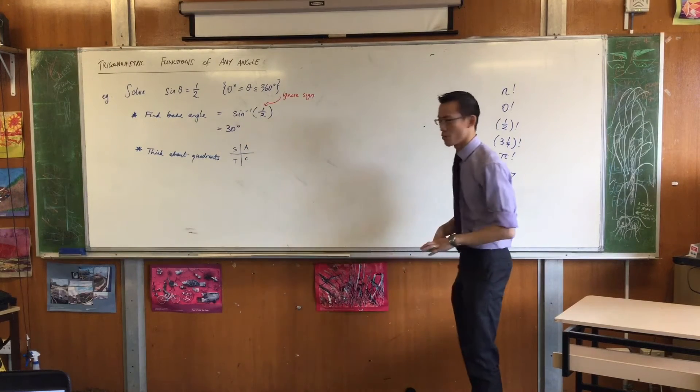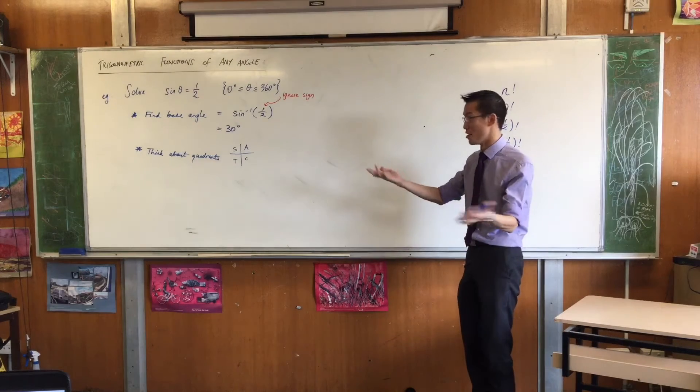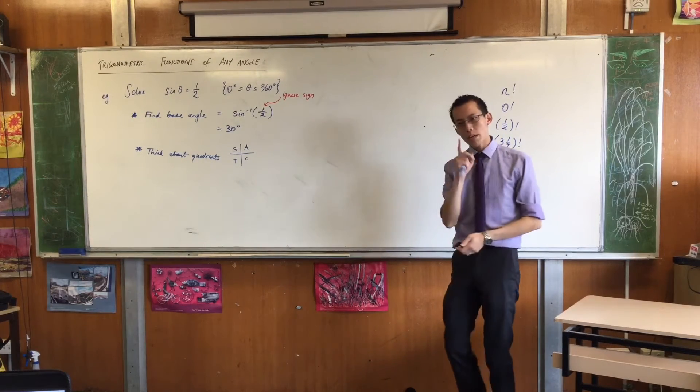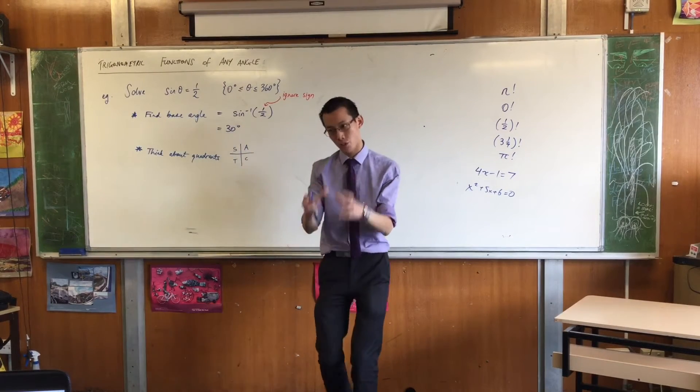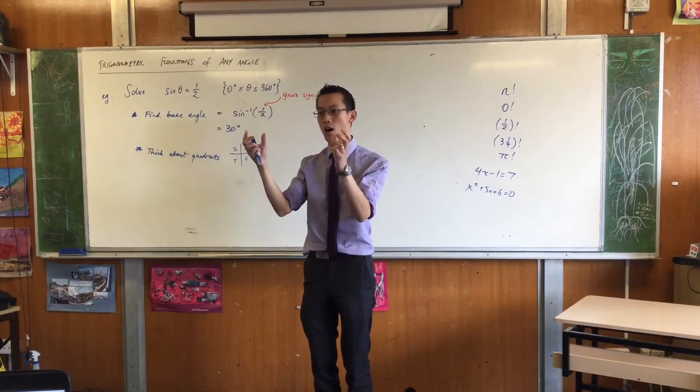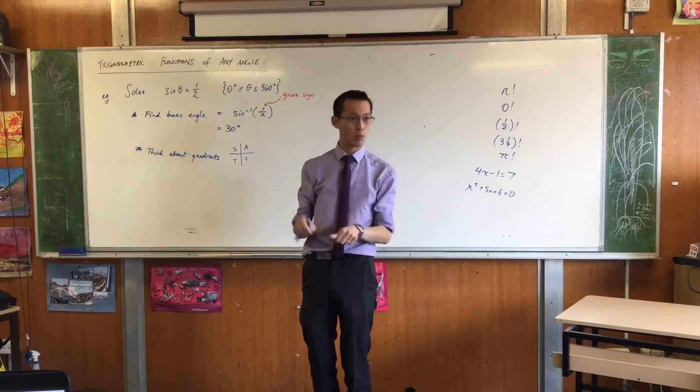We'll say it's ASTC or whatever acronym mnemonic device you prefer to use. And then what I say is remember what each of these refers to, okay? It refers to which trig functions are positive in which quadrants, okay?